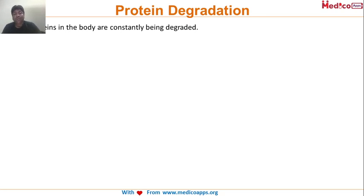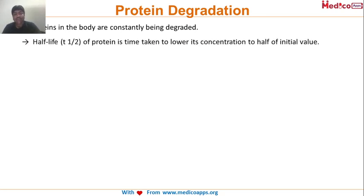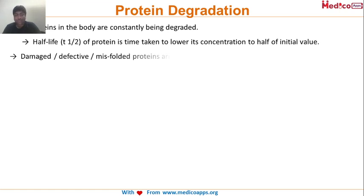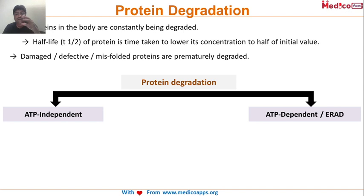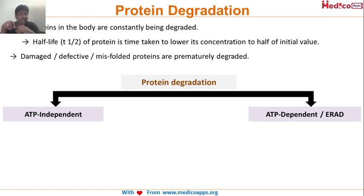All proteins in the body are constantly being degraded, but misfolded proteins have a shorter half-life and are prematurely destroyed. There are two independent mechanisms of protein degradation: an ATP-independent mechanism and an ATP-dependent mechanism - two grossly different types involved in protein degradation.